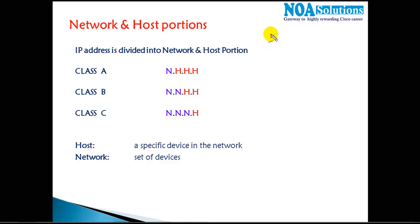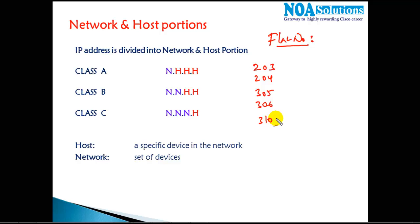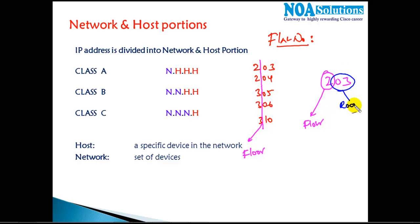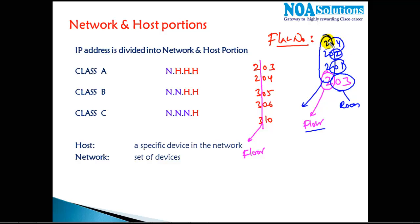Consider a simple example: hotel room numbers. The numbering in hotels is generally like 203, 204, 305, 306, 310. The first part represents a specific floor — so '203' means the '2' represents the second floor. On that second floor, '03' is the room number. On a particular floor you may have rooms 201, 202, 203, 204, and so on, with a common part identifying the floor.